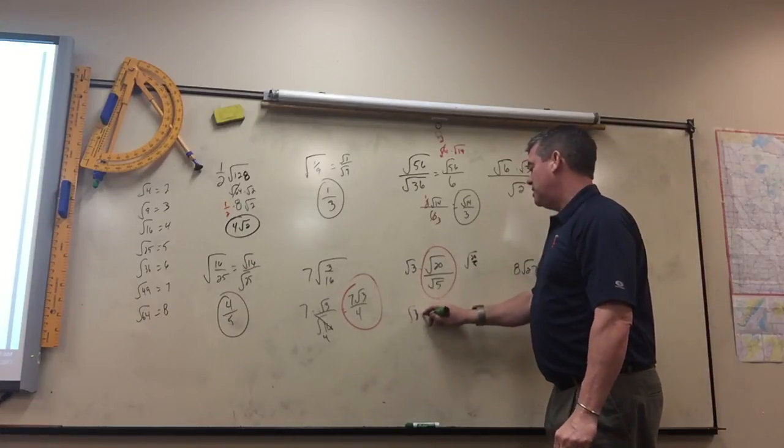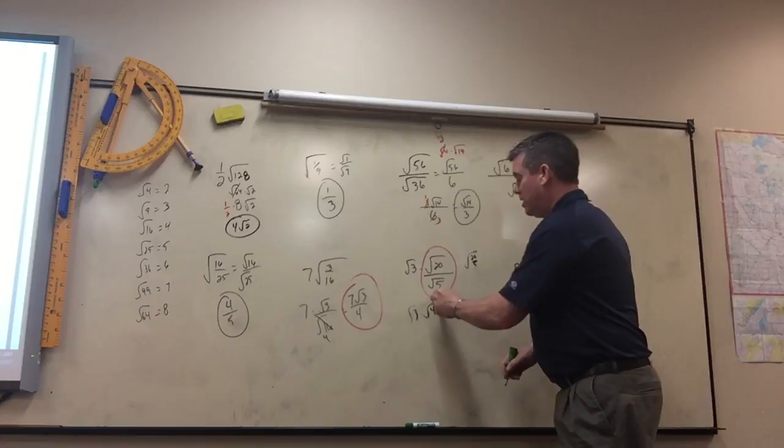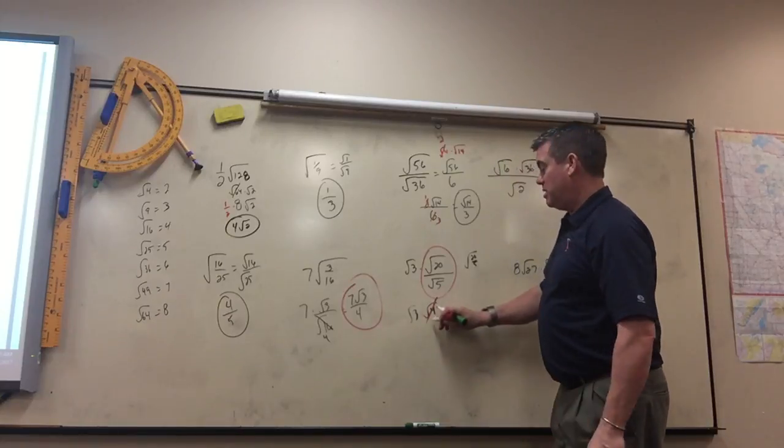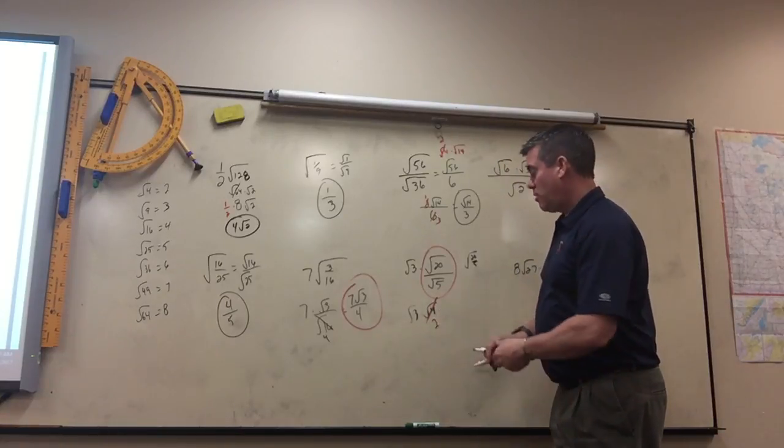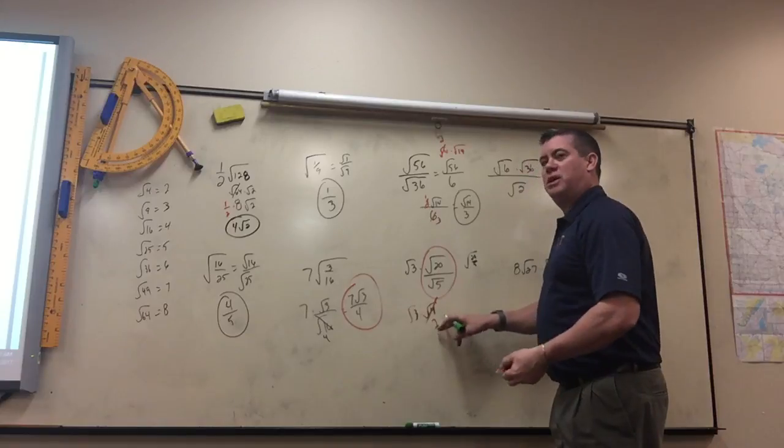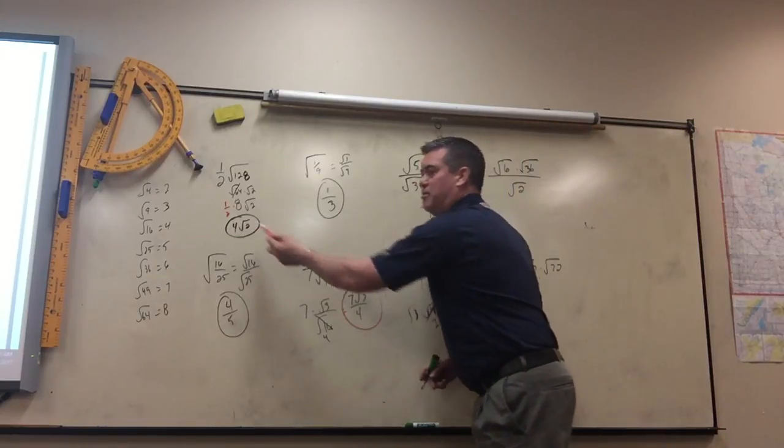So this is square root of 3 times the square root of 4. Square root of 4 is a perfect square. It's just 2.